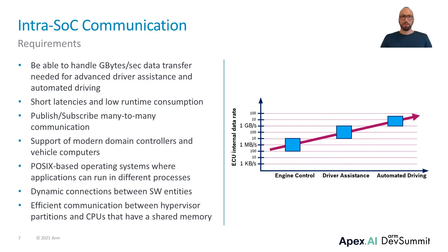For example, the nodes could run in different executables that can be started individually. An SoC can have multiple CPUs, and also a hypervisor could be used to run different operating systems in parallel on one of these ECUs. The shared memory that the SoC provides to all these operating system instances can be leveraged if a highly efficient connection is needed.